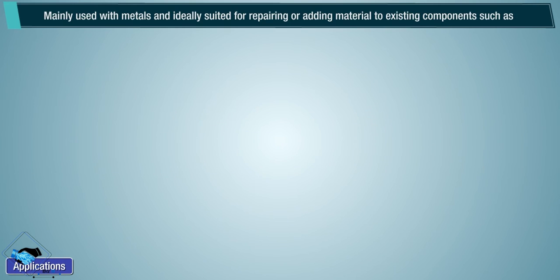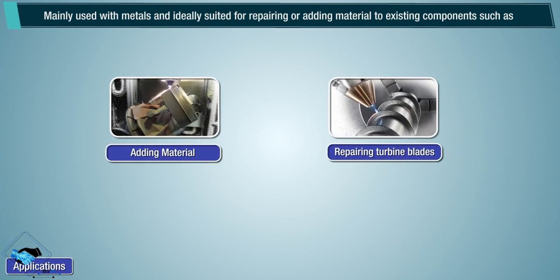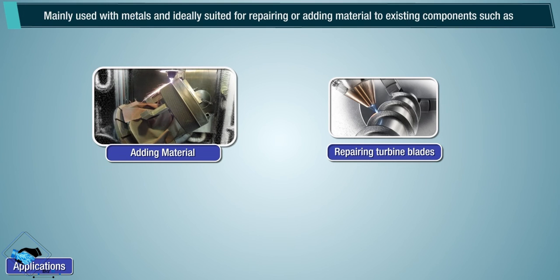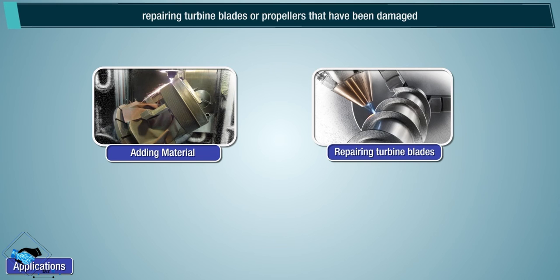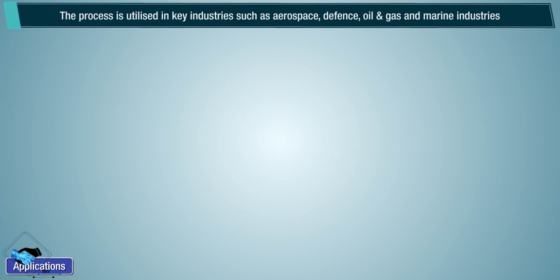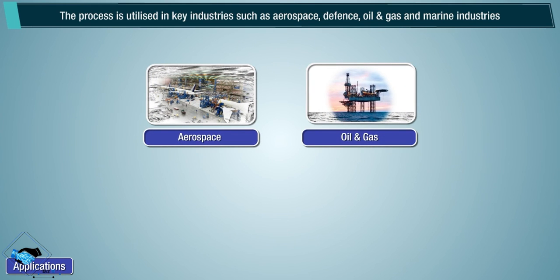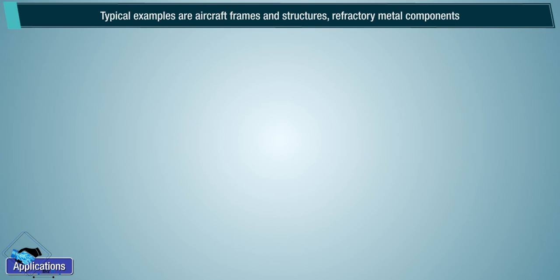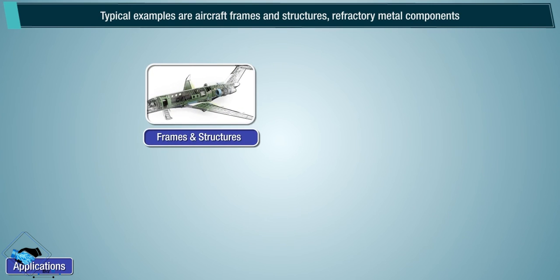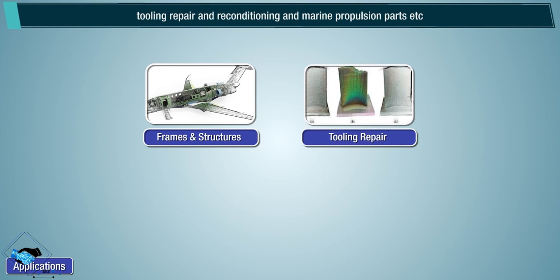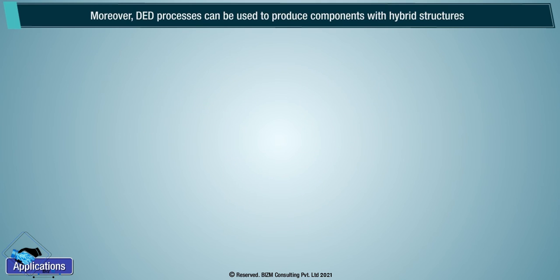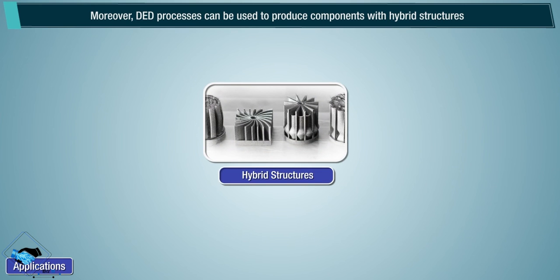Applications: mainly used in metals and ideally suited for repairing or adding material to existing components, such as repairing turbines, blades, or propellers that have been damaged. The process is utilized in key industries such as aerospace, defense, oil and gas, and marine. Typical examples are aircraft frames and structures, refractory metal components, tooling repair and reconditioning, and marine propulsion parts. Moreover, DED processes can be used to produce components with hybrid structures comprising multiple materials with different compositions.